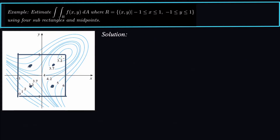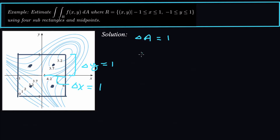Delta x is this distance right here, so delta x equals 1. Same thing for delta y — delta y equals 1. Now delta A equals delta x times delta y, so delta A is just equal to 1. The double integral over the rectangle of f(x,y) is just the sum of all the function values times delta A.